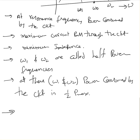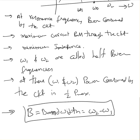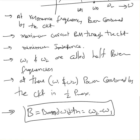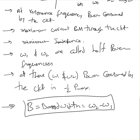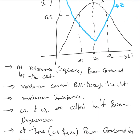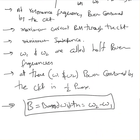Another term we define is bandwidth, indicated as B. Bandwidth equals omega 2 minus omega 1. Basically, bandwidth is the frequency range between the two half power frequencies — the difference between the higher half power frequency and the lower half power frequency.